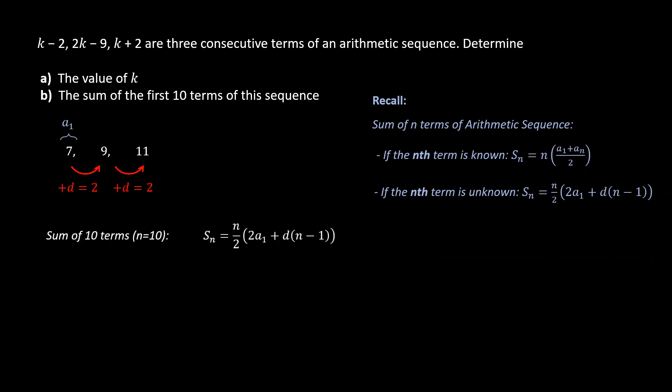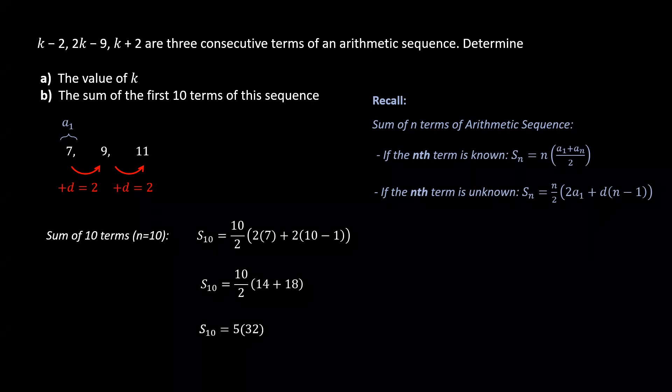To find the sum using the second formula, we substitute a1, n, and d, and then we'll get 10 over 2 times the product of 2 and 7 plus the product of 2 and (10 minus 1). We evaluate the bracket to get 14 plus 18, and their sum will be 32. Finally, we multiply 5 by 32 to get 160. So the sum of the first 10 terms of the sequence is 160.